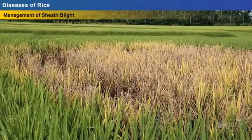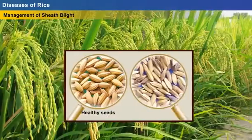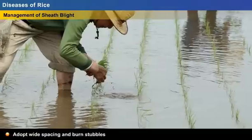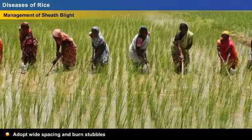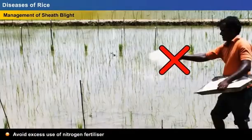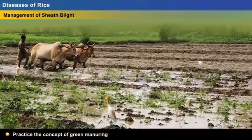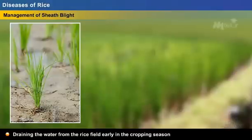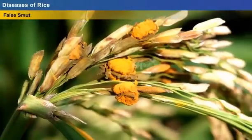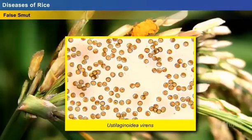Sheath blight can be controlled by growing more tolerant rice varieties, by avoiding the use of infected seeds, by treating the seeds with fungicide before sowing, by adopting cultural practices like wide-space sowing, control of weeds in and around rice fields, and burning of stubbles, by avoiding the excess use of nitrogen fertilisers, by practising the concept of green manuring during land preparation, by draining the water from the rice field early in the cropping season during the sheath formation so as to control the spread of epidemics, and by adopting crop rotation with dicot crops as the fungus spreads easily in monocot crops.